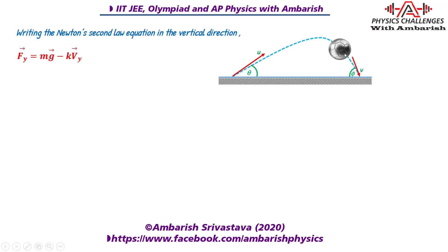Let's look at this in terms of impulse and momentum. If we consider the ball at any location, the drag force on it is minus k times the velocity vector. Since this is a vector equation, we can write the component equations. The drag force in the y direction is minus k times vy. And of course, there is mg acting in the vertical direction. So the net force in the y direction is mg minus k·vy.